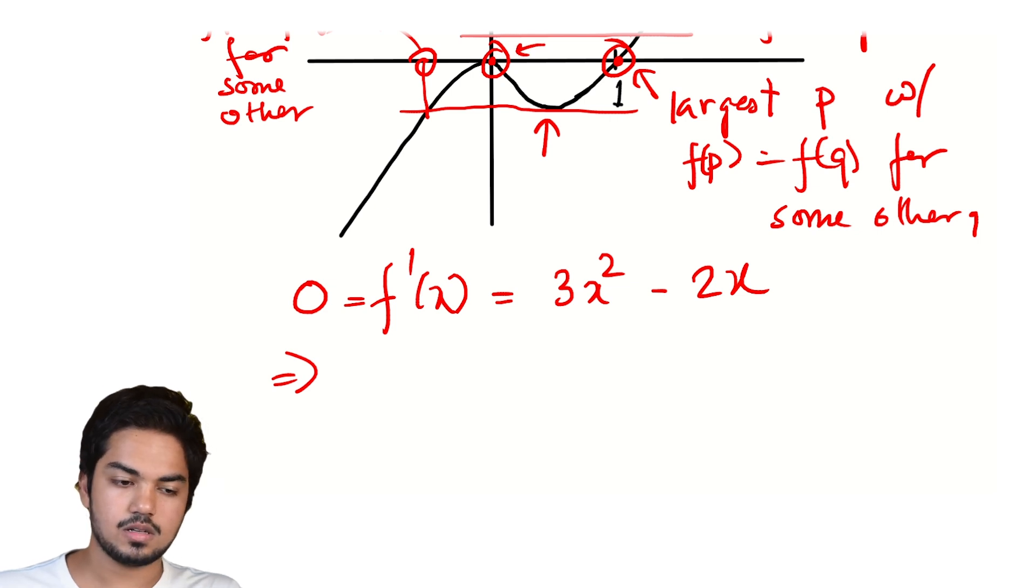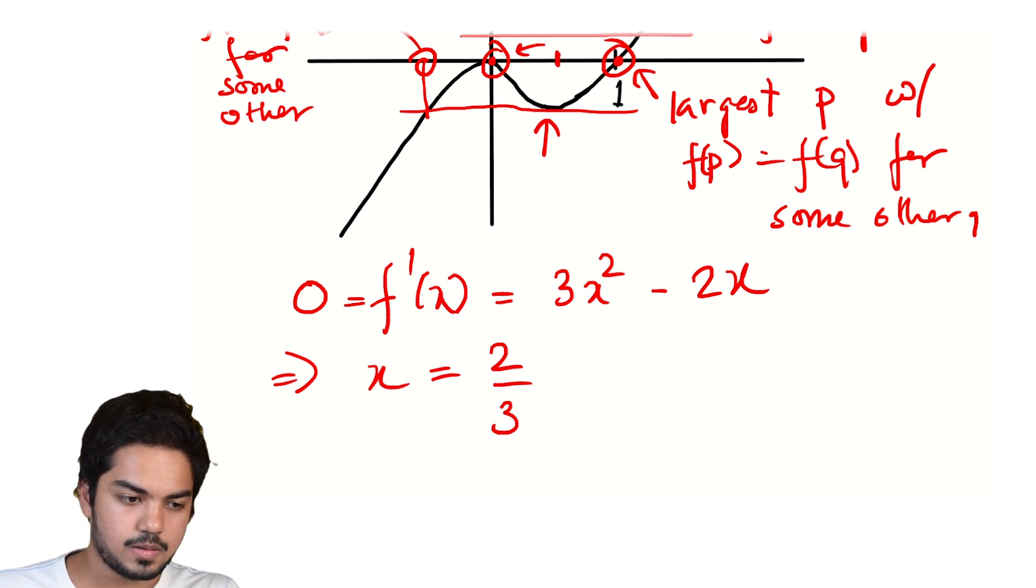What is f'(x)? f'(x) = 3x² - 2x. And if we want this to be 0, we're just asking for either x = 0, which we've already covered, right? That's the point of local maxima. We don't want that. So that just gives us that x = 2/3.